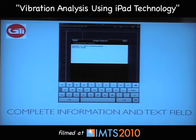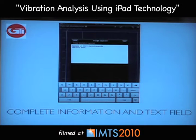As you save the data, another option lets you enter all the reference information for the reading — machine type, serial number, location on the floor. It provides an essentially unlimited amount of text, which is bulleted and documented at the bottom of the report, giving you a robust report when you save the reading to images or a PDF file.